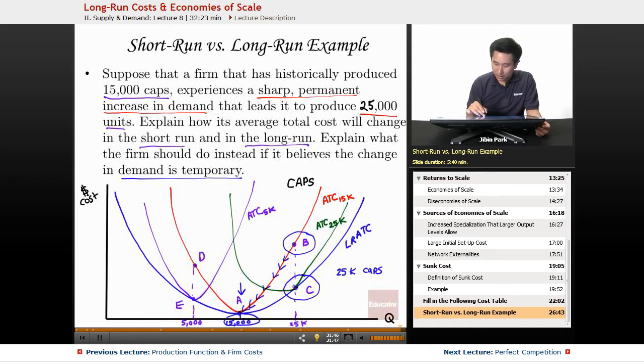Otherwise, what's going to happen is instead of working on this ATC, what ends up happening is that if you adjust for a fixed cost of 25,000, and now you only make 15,000, what you end up is you're at point F and the ATC now is higher.